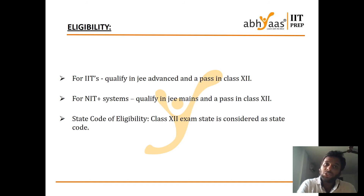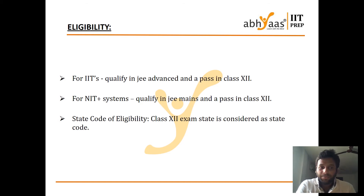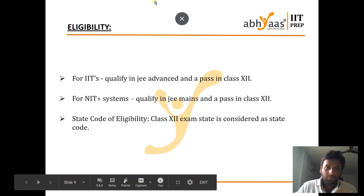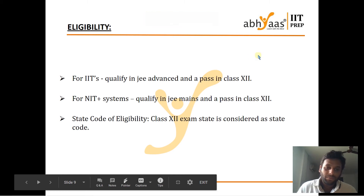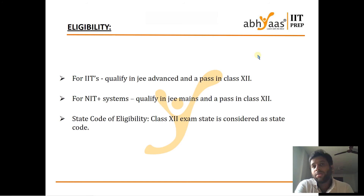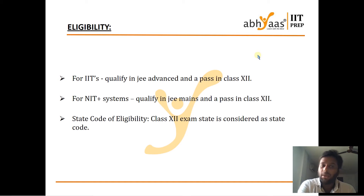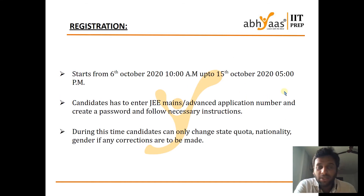Registration starts on 6th October 2020, 10 a.m. onwards and is up to 15th October. But it is better to register before 8th October so you can also apply for the mock seat allocation. The candidate has to enter JEE Mains or Advanced application number, create a password, and follow the necessary instructions. During this time, if there is any change in your state quota, nationality, or gender - only these three - you can change them while completing registration. This is the last chance for you to change your state quota, nationality, and gender if there are any mistakes.